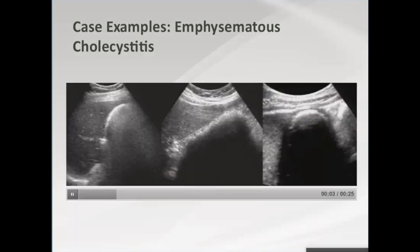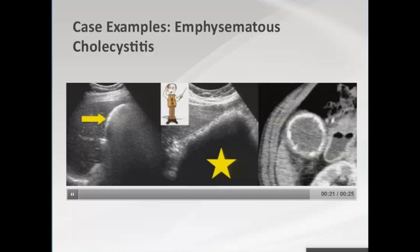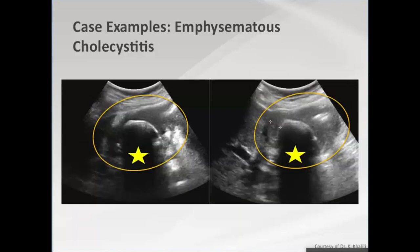A third gallbladder to consider: the wall looks similar to the emphysematous case, but the teaching point is that the shadow is the important feature. Here the shadow is one of calcium — this is a calcified gallbladder wall, a porcelain gallbladder.